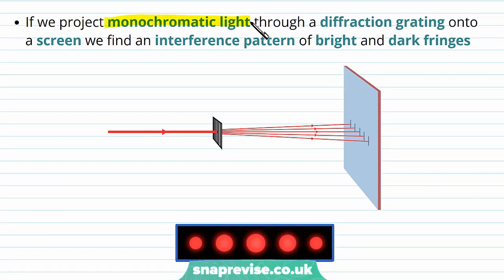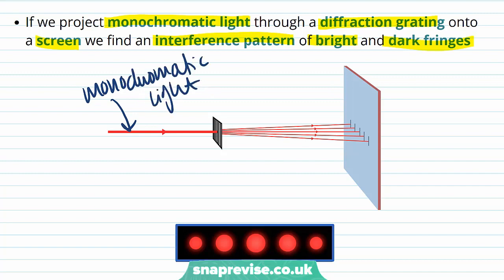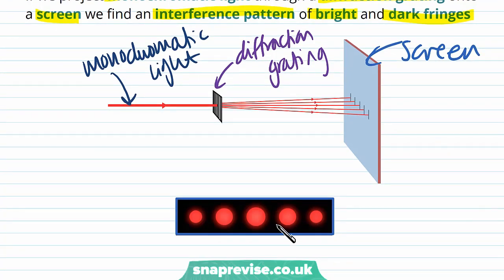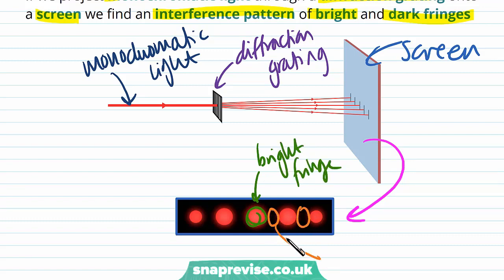If we project monochromatic light through a diffraction grating onto a screen, we find an interference pattern of bright and dark fringes. Here we have monochromatic light of a single frequency directed through a diffraction grating, and just like with double slit diffraction we place a screen to observe the pattern. We can see bright fringes with dark fringes in between each of them.